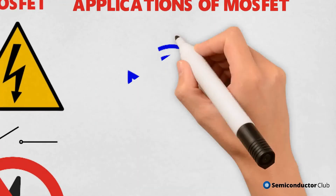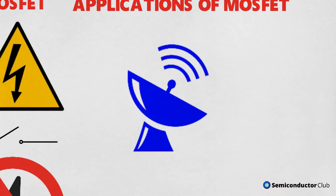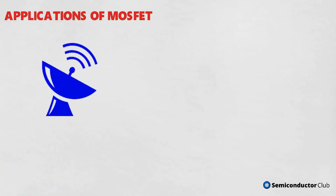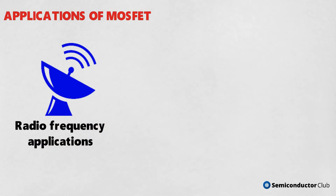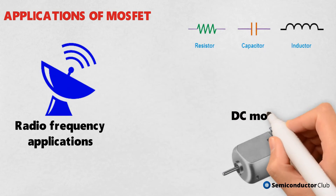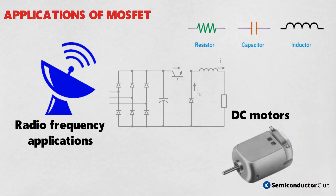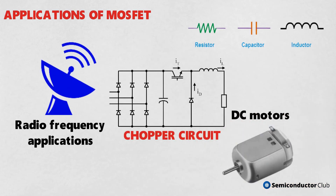MOSFET amplifiers are extensively used in radio frequency applications. It acts as a passive element like a resistor, capacitor, and inductor. DC motors can be regulated by power MOSFETs. The high switching speed of MOSFETs makes it an ideal choice in designing chopper circuits.